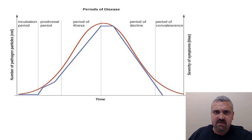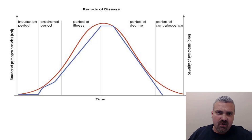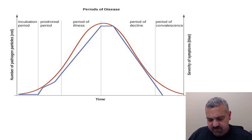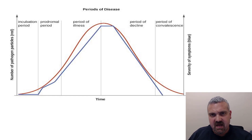Let's talk about the periods or stages of disease. As you can see here, almost all diseases are going to follow this five-step process. Now, it's not always going to be a beautiful-looking bell curve like this, but let's go through each step, and we'll give you some examples.